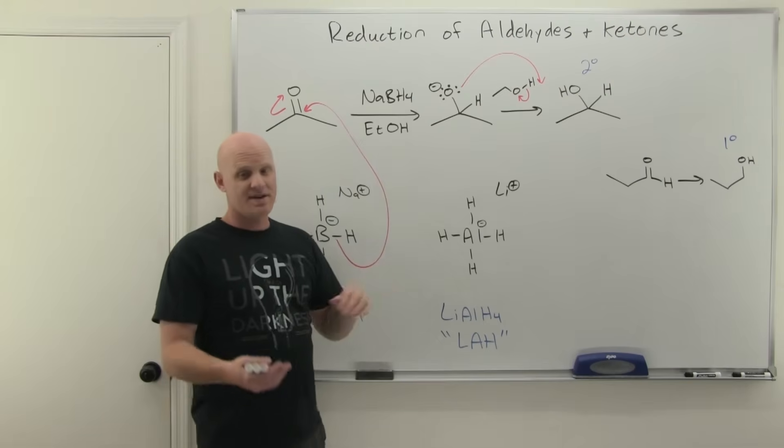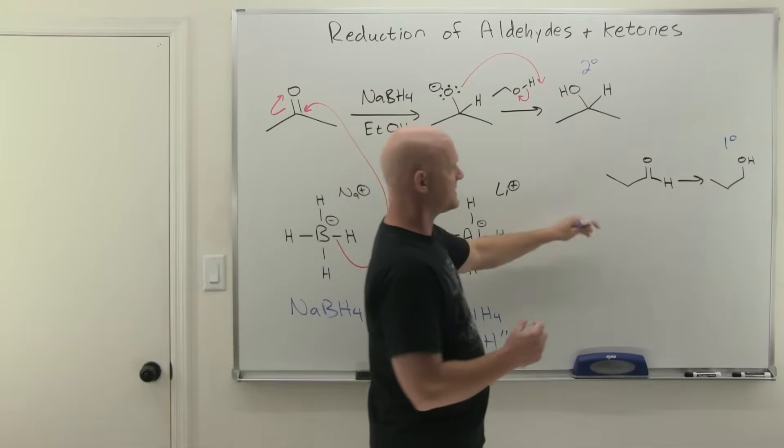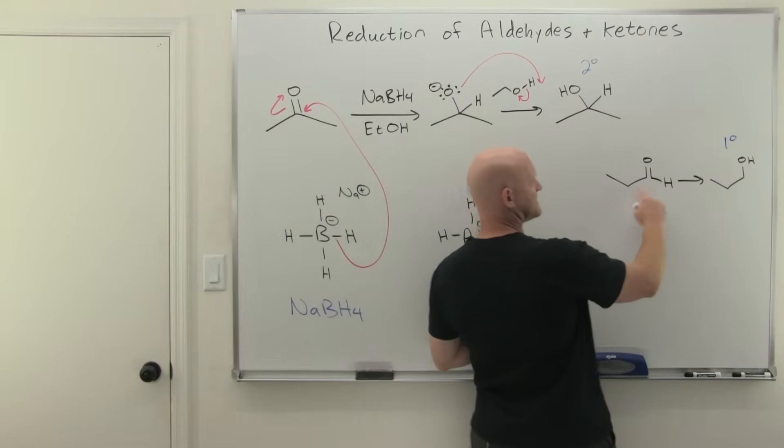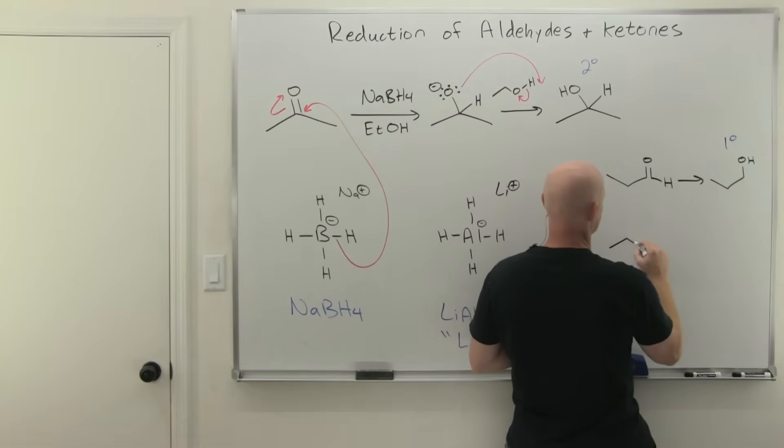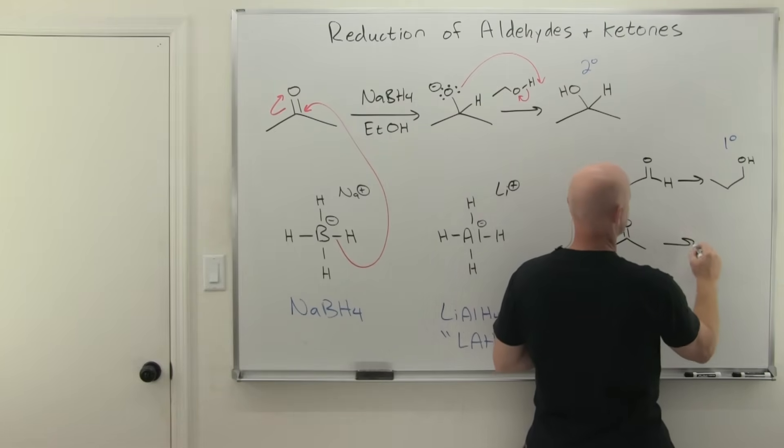To summarize: aldehydes get reduced with either one of these reagents, sodium borohydride or lithium aluminum hydride, to a primary alcohol. Secondary alcohols are formed when you reduce a ketone.